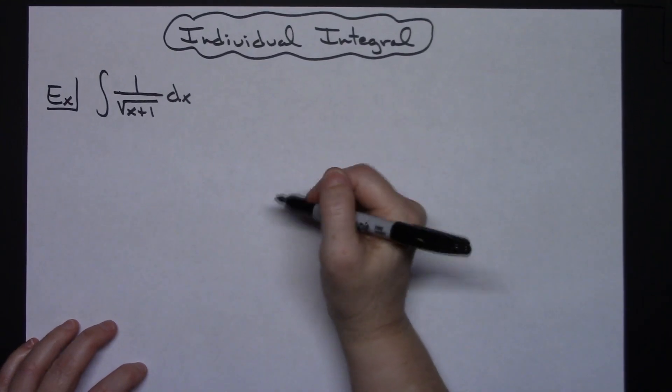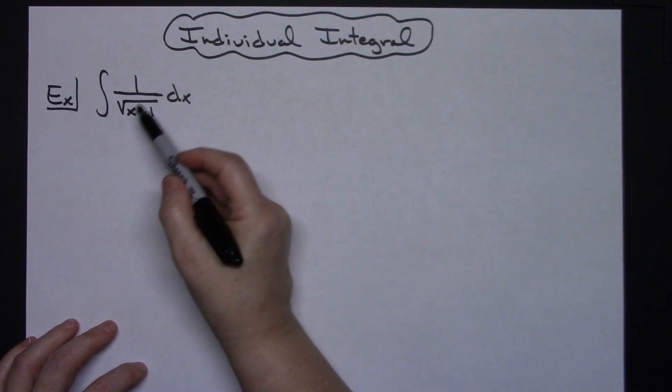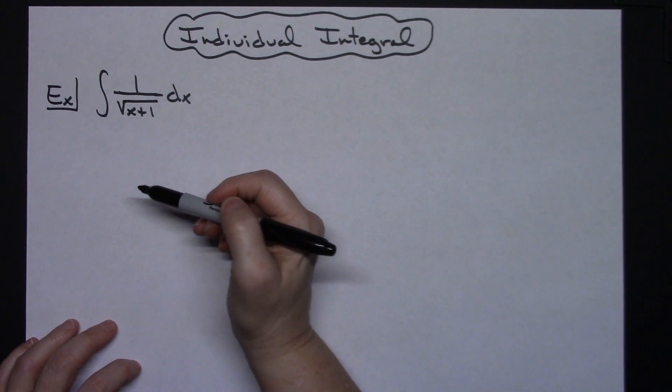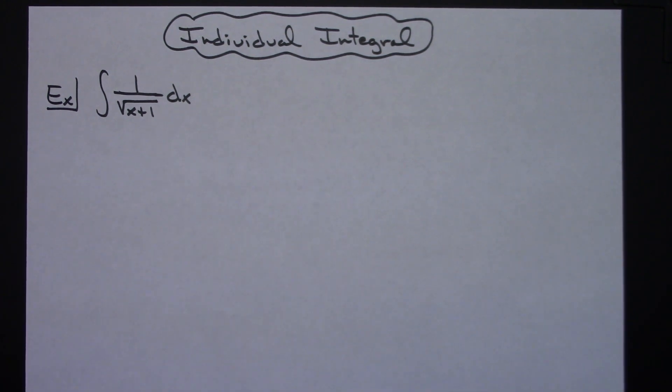In this video we're going to be working out an individual integral. It's going to be the integral of 1 over the square root of x plus 1 dx. This is going to be an integral that you would typically find in a calc 1 class. It's going to be a straightforward u substitution.